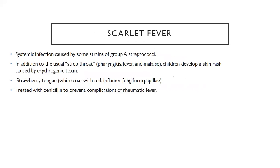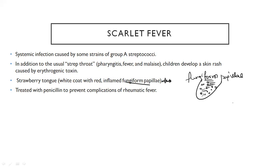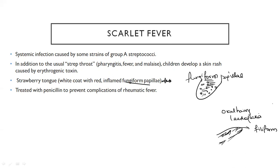Coming to scarlet fever — the most important feature is strawberry tongue, where the tongue appears white and raised. Fungiform papillae can be seen; the red colored dots you see are because of fungiform papillae. In comparison, filiform papillae are seen in oral hairy leukoplakia, whereas in scarlet fever it is the fungiform papillae.